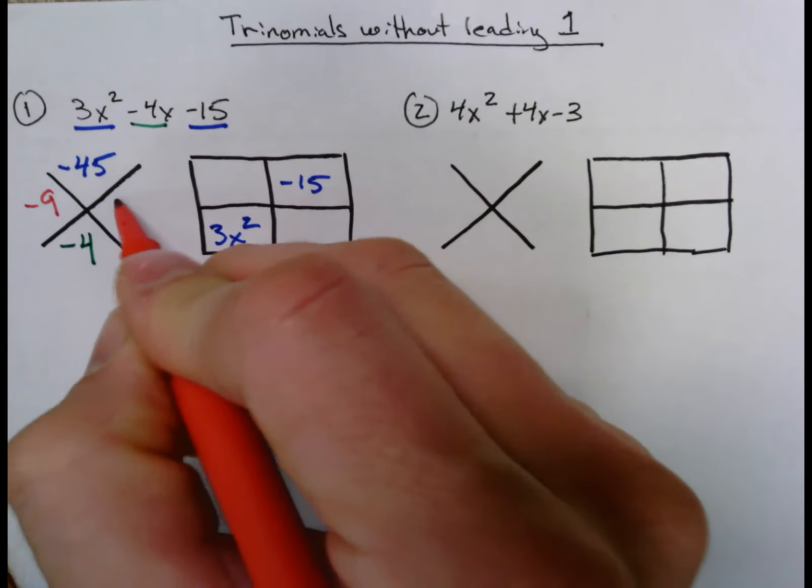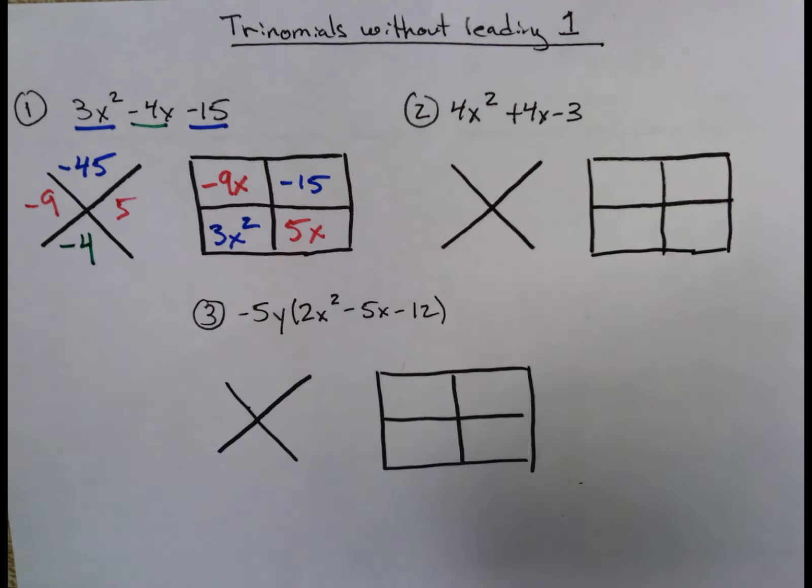Those are what go in the other diagonal, so -9x, positive 5x, and then you factor from there.